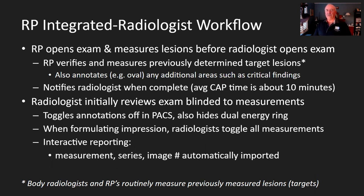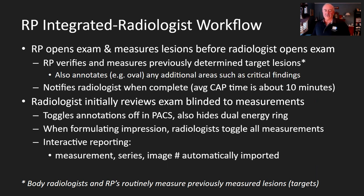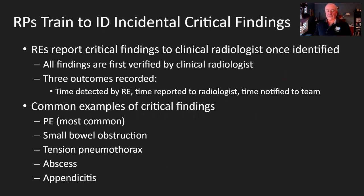Basically, the RP opens the exam and measures the lesions before the radiologist opens the exam. They determine which are the target lesions, objectify those by measuring them, and make any annotations such as ovals for critical findings. We are notified when that exam is complete and know when to pick it up. We initially review the exam with measurements toggled off. Then when formulating the impression towards the third or fourth minute in the CT, we toggle on the measurements, scroll through each one, and import the ones we like into our reports, deleting any we don't like.